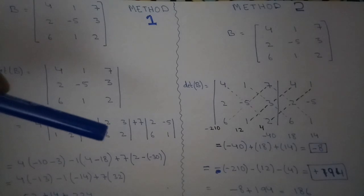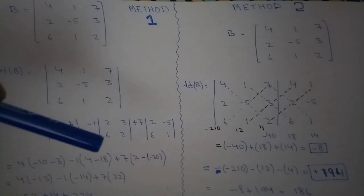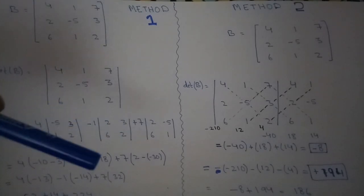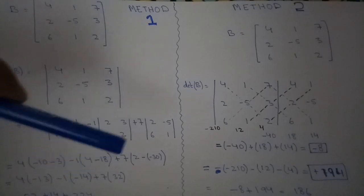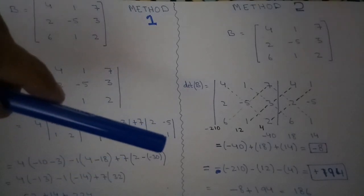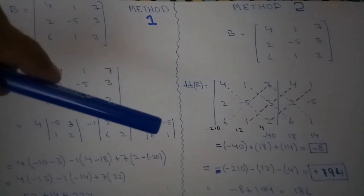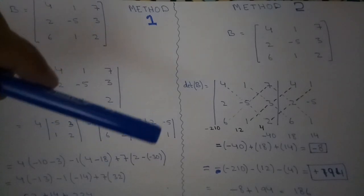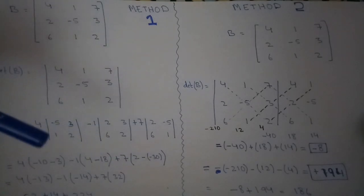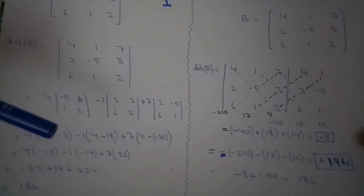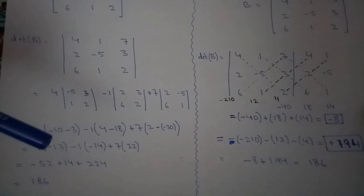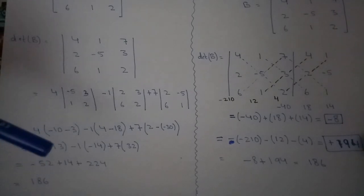Similarly, minus 1, 2 by 2 will be 4, minus 6 by 3 will be minus 18, plus 7. 2 multiplied by 1 will be 2, minus 6 multiplied by minus 5 will be minus 30.